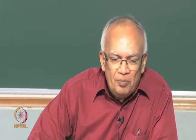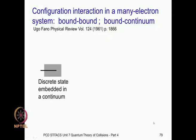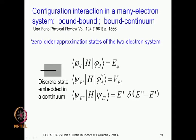Greetings. We are coming toward the end of this course — there are just two more classes including today, and then one more. We have come a long way in Fano's analysis of the interaction between discrete bound-to-bound transitions and bound-to-continuum transitions. We have a situation in which a bound-to-bound discrete state is embedded in the continuum, and we constructed the energy matrix in our previous class which has these elements.